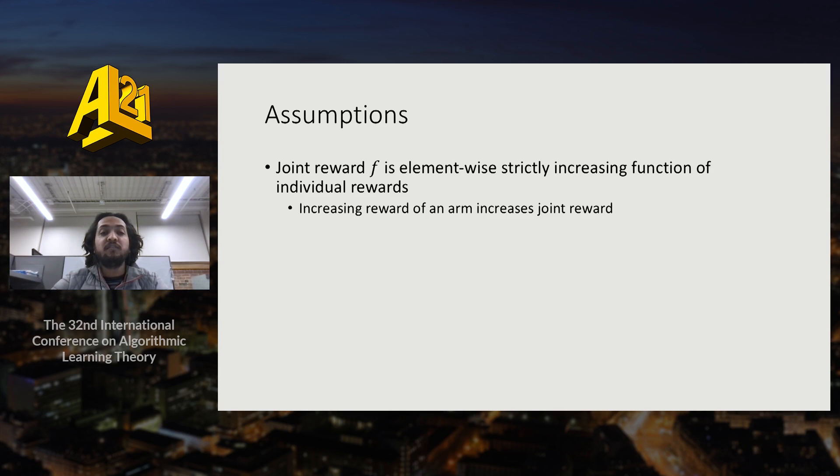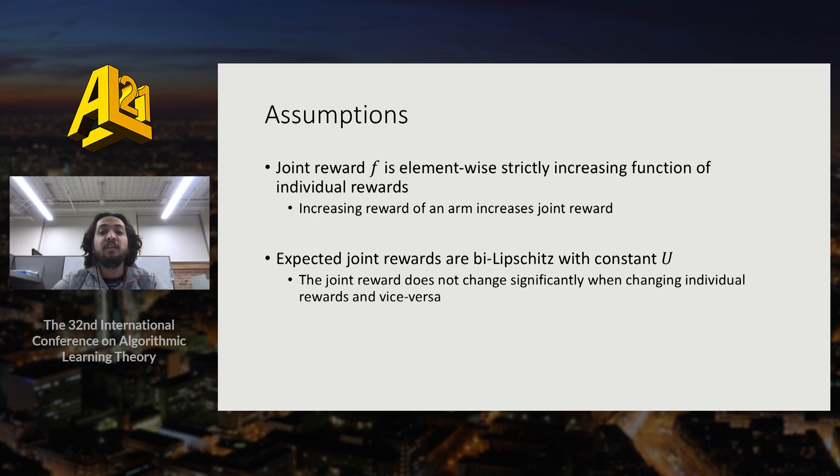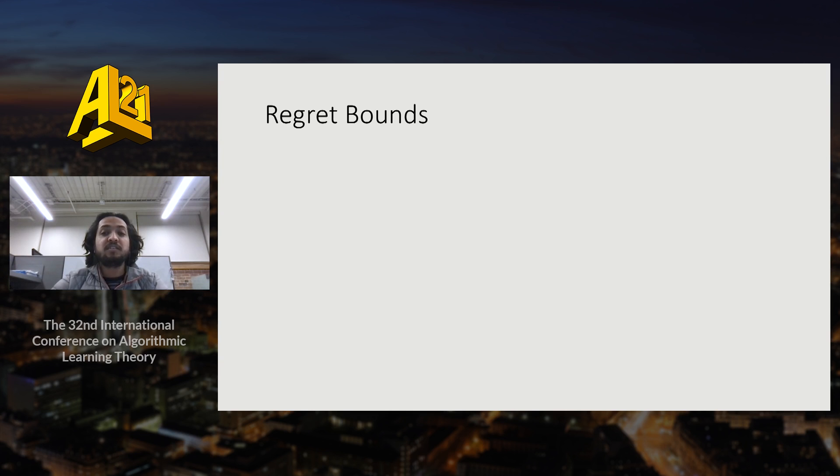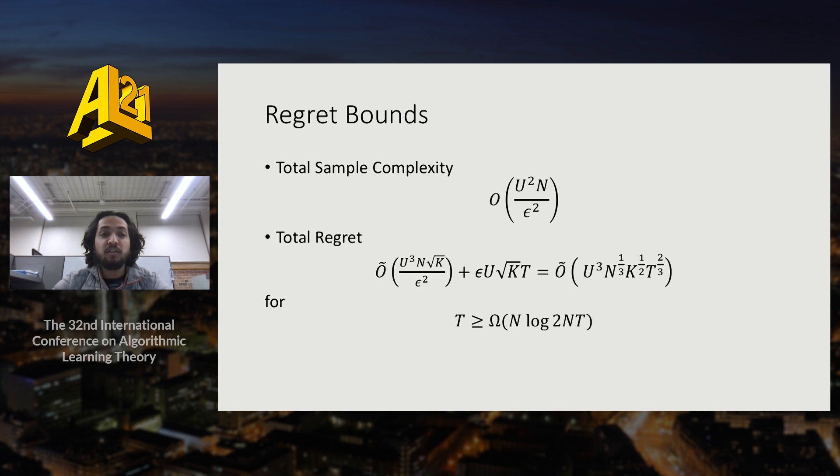To analyze the algorithm we make certain assumptions. The first assumption is that the joint reward of an action increases when we increase the reward of an arm contained in that action. Further, we assume that the joint rewards are L-Lipschitz to have some notion of continuity in the rewards. This allows us to obtain a total sample complexity of L-square N divided by epsilon-square and a total regret of L-square N^(1/3) K^(1/2) T^(2/3) when T is at least N log N.